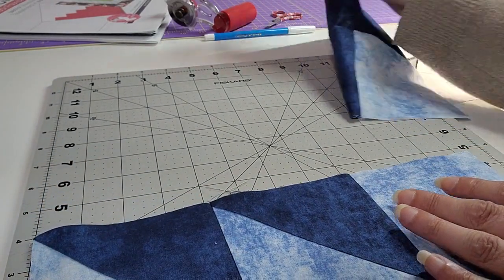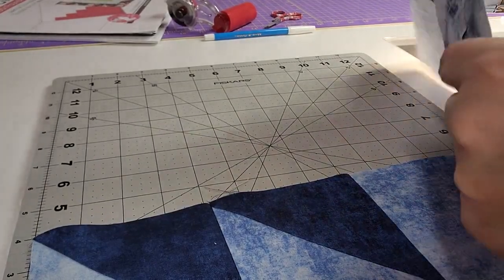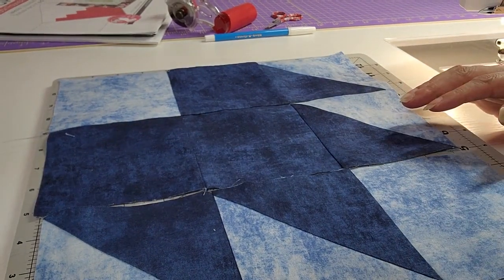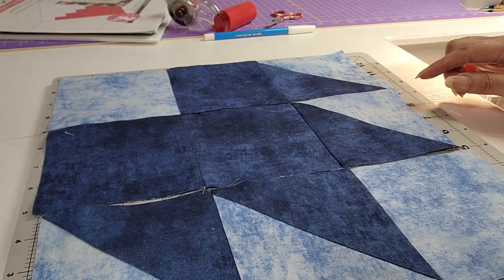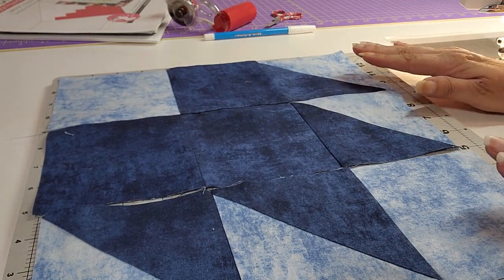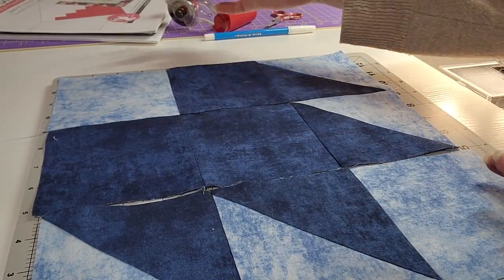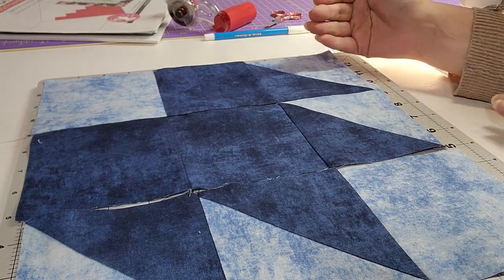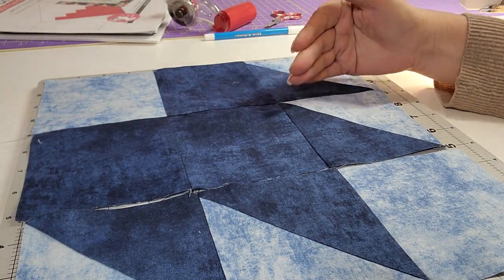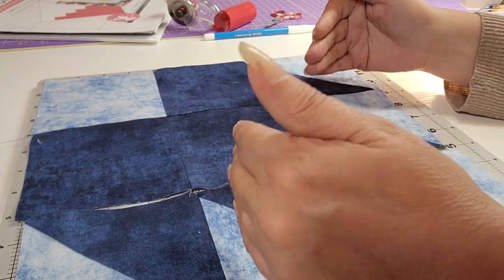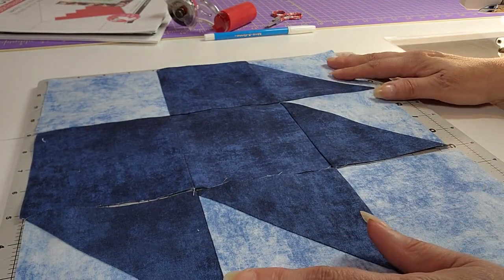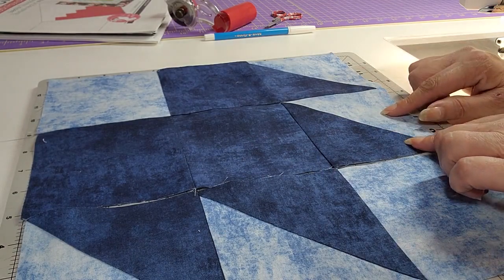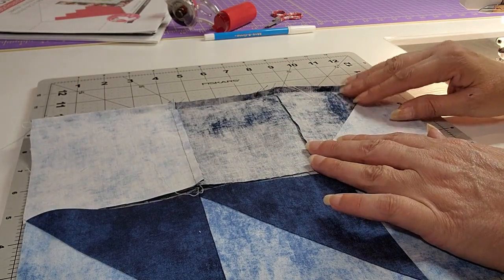I already went ahead and did my other two rows so I could make the tutorial just a little quicker today. You'll just follow doing a light, a dark, and then a half square triangle with your dark point heading towards your dark. All of your dark points will be heading inward towards your dark, which will make up your leaf pattern. Then you'll have two darks that are your four and a half inch squares and then your half square triangle.